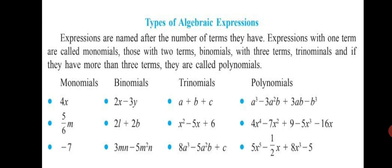Trinomials, you will see three terms, a plus b plus c, x square minus 5x plus 6, 8a cube minus 5a square b plus c. So, three terms means trinomials.